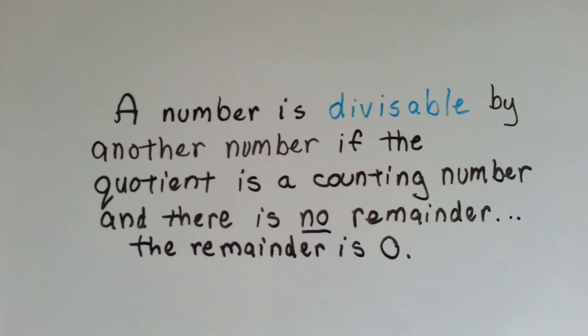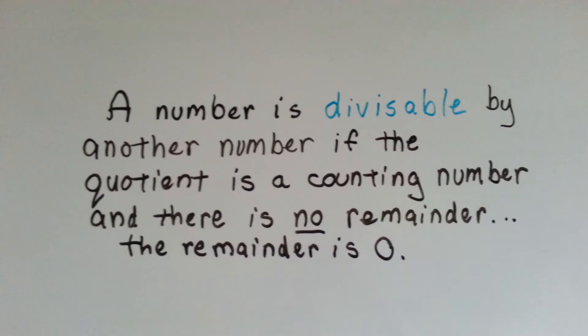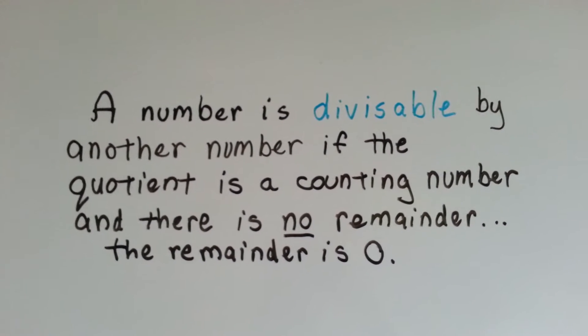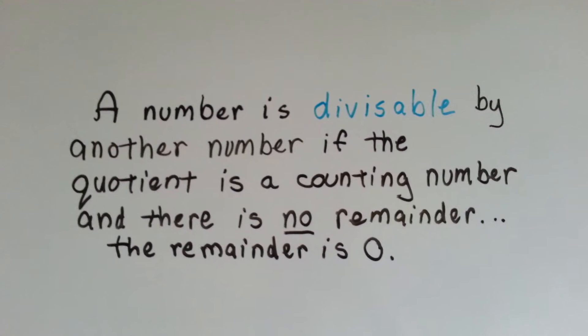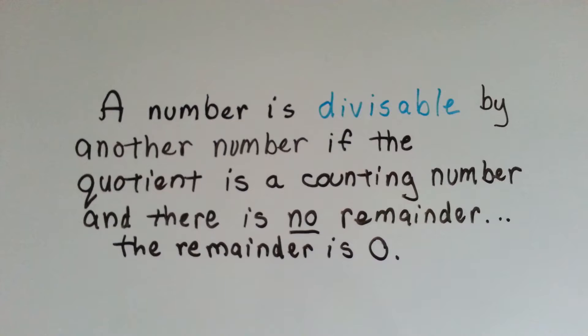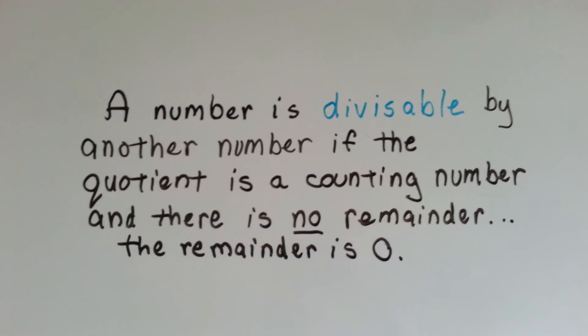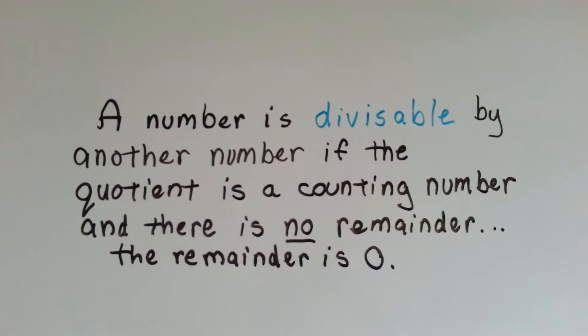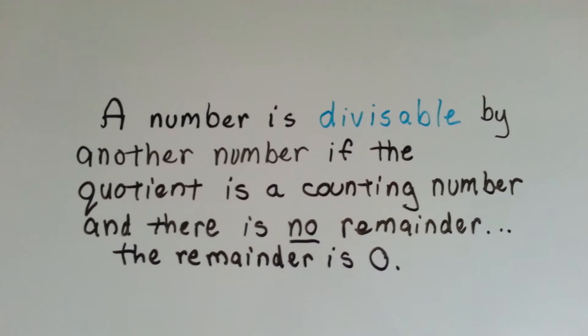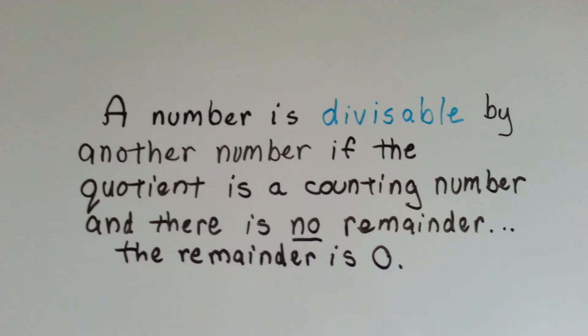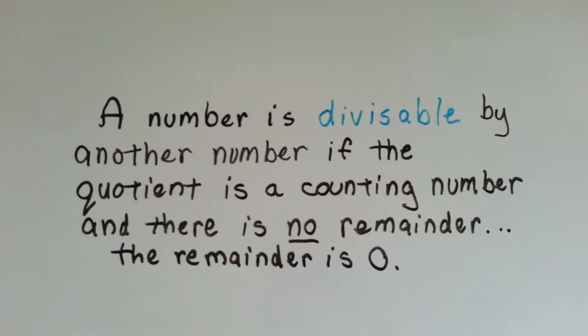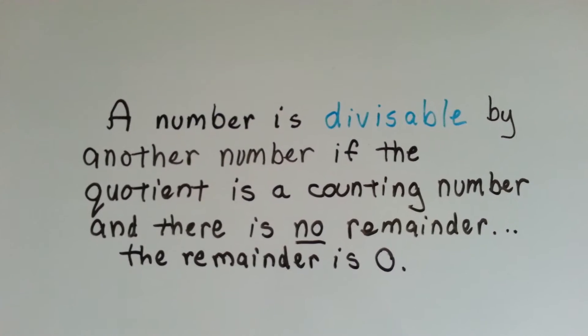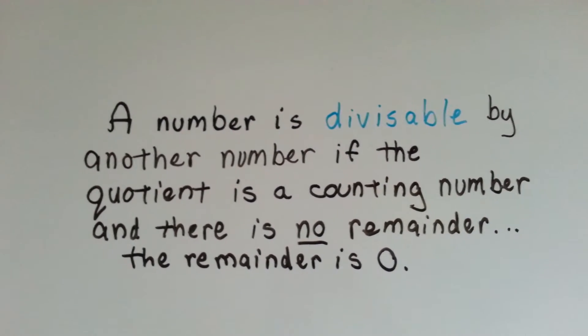Fractions aren't allowed. It's got to be a counting number: 1, 2, 3, 4, 5, 6, 7. So if you can divide it by a counting number and there's no remainder, then it is divisible by that number.